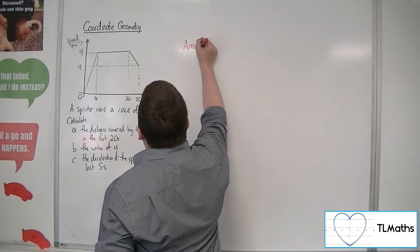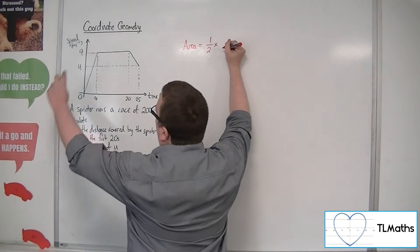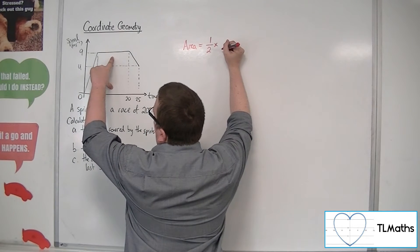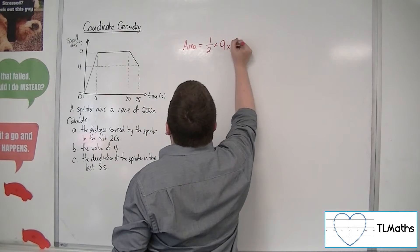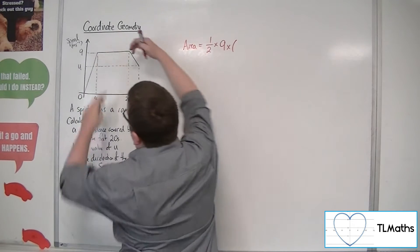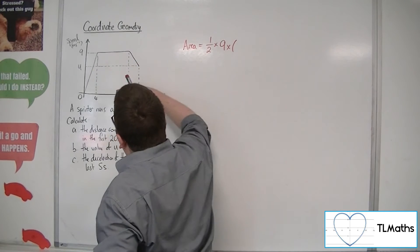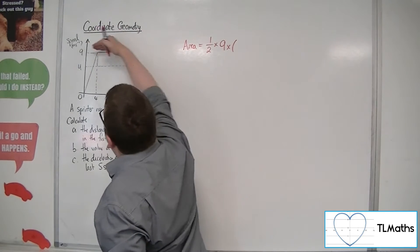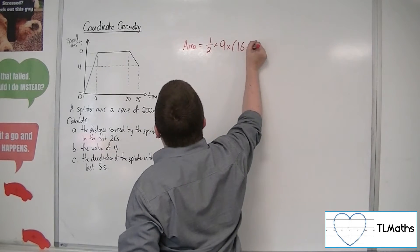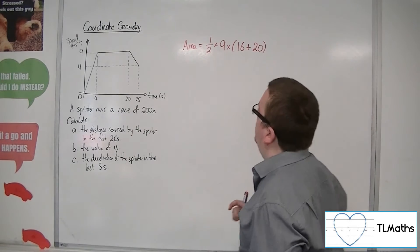Area is equal to half times h, the height of the trapezium, which will be 9, times by the sum of these edges, that edge there and that edge there. So we've got 16 plus 20, because we're just finding it up to that 20 point.